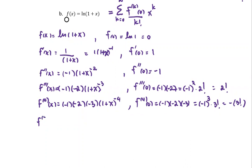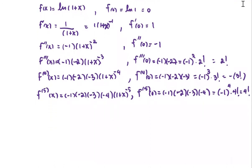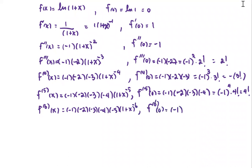Finding a couple more orders of the derivative makes the pattern clearer. For the fifth derivative: negative one times negative two times negative three times negative four times one plus x to the power negative five. At zero, this gives negative one to the fourth power multiplied by four factorial, which is positive four factorial. For the sixth derivative: negative one times negative two times negative three times negative four times negative five times one plus x to the power negative six. The sixth derivative at zero is negative one to the fifth times five factorial, which is negative five factorial.